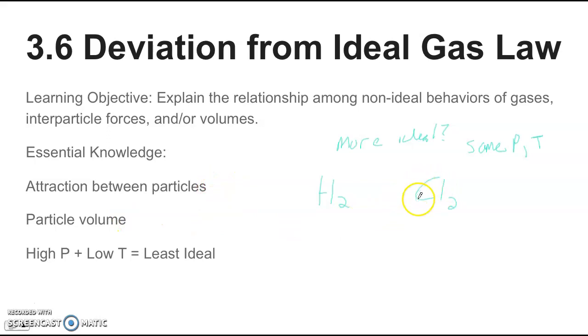And for particle volumes, chlorine is just, it's bigger than hydrogen. So it's going to have a greater volume. So the volume of this particle becomes less negligible. That means that at that same pressure and temperature, hydrogen would be the more ideal gas. You'd expect it to be the more ideal gas because it has weaker intermolecular forces and it has a smaller particle volume.